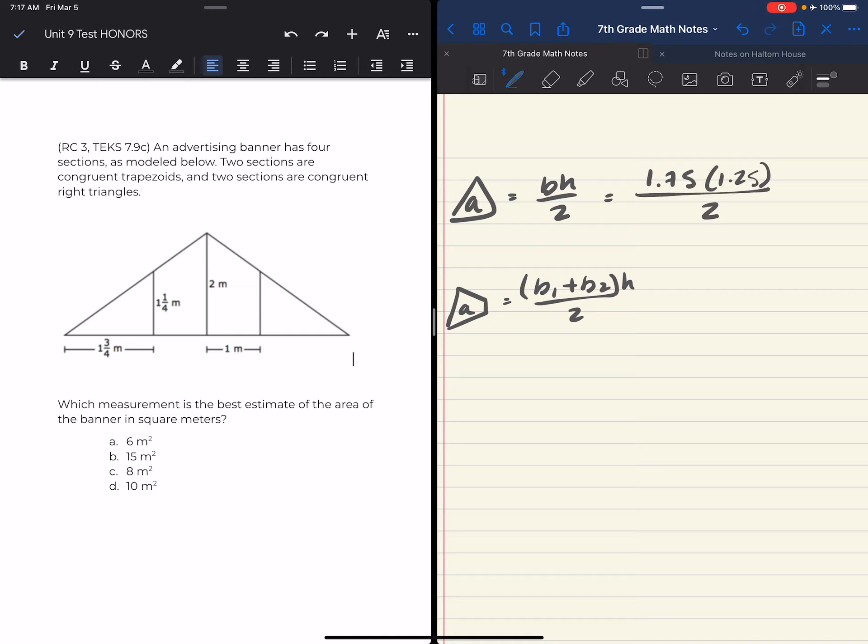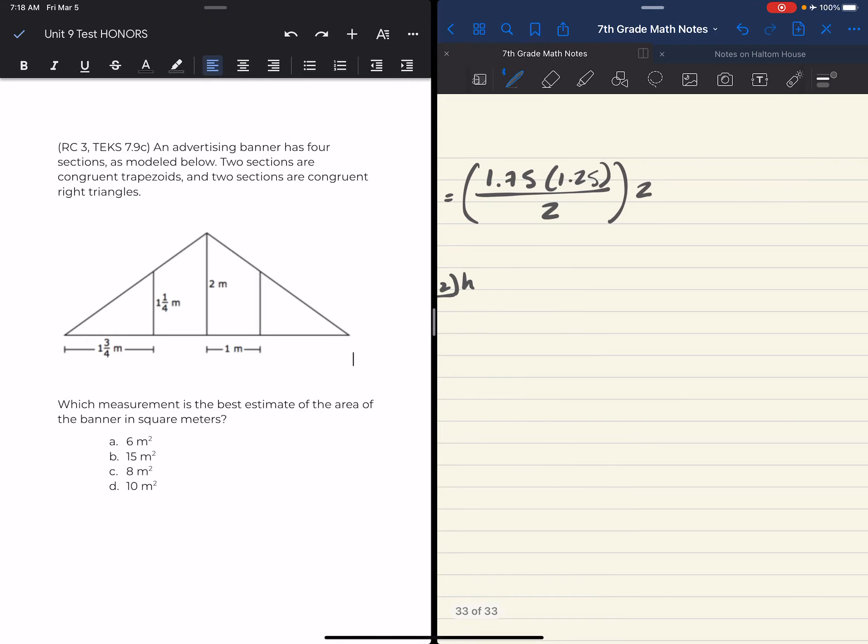So 1.75 times 1.25, then divided by two for one of them. But guys, keep in mind, we also have to multiply it by two because there's two of them.